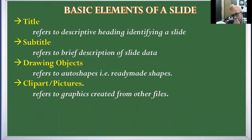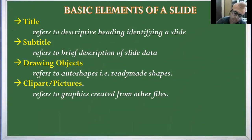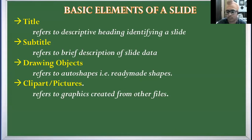Now what are the basic elements of a slide? First is the title — the descriptive heading that you give to your slide by which it gets identified. Then subtitle, which is a brief description about the data in the slide. Drawing objects are the auto shapes — like in Writer, the ready-made shapes available on the drawing toolbar. Then clip art and pictures — any graphics or images taken from other files.